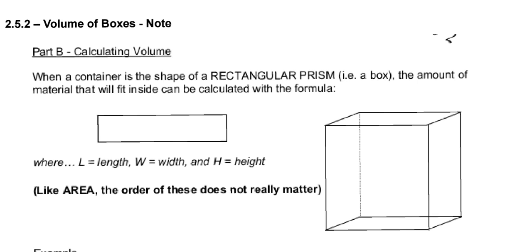We're talking about the volume, okay? When we're calculating the volume, we're talking about the volume of a box, right? And when we're talking about that, we're talking about a thing called a rectangular prism. So that is what the term rectangular prism means — it means it's a box. The amount of material which is inside a box is called the volume, and the equation for the volume is given by V equals length times width times height.